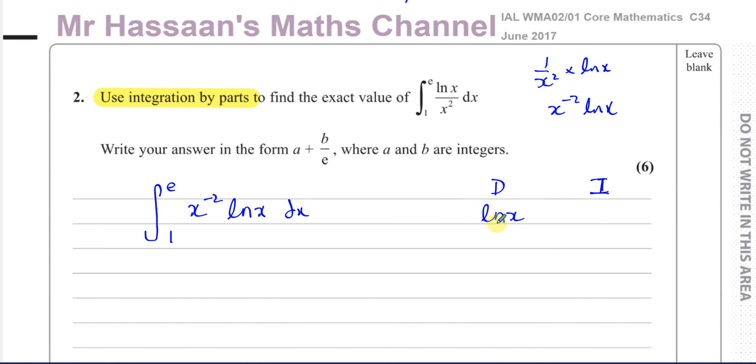ln(x) is our D, and x to the power of minus 2 is our I. This is the part we differentiate, and this part we integrate. When you differentiate ln(x), you get 1 over x. So ln(x) becomes minus 1 over x. And x to the power of minus 2, when you integrate it, you add 1 to the power, becomes x to the power of minus 1, divide by the new power, you end up with minus 1 down there. So it's actually minus 1 over x.